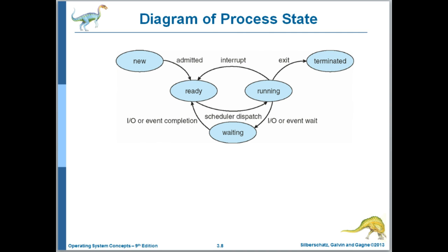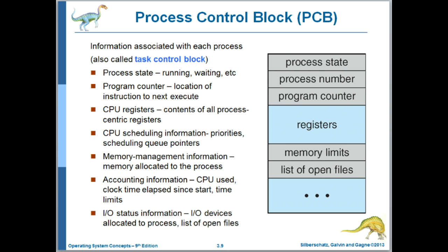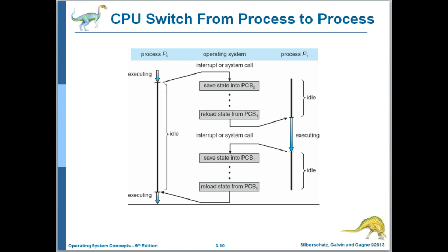Here's a graph that depicts the process states and the transitions between them. All of the information related to a process is kept in an operating system data structure called the Process Control Block, or PCB. Looking at the PCB figure, we see the process state, process number — in Linux it's called the PID, an integer identifier — the process's registers, and the resources allocated to a process such as memory segments, open files, and other devices.